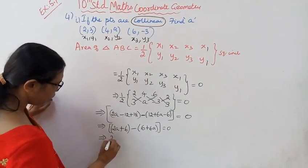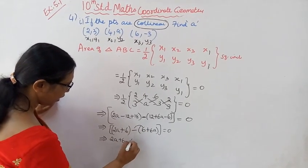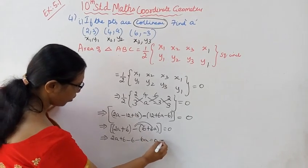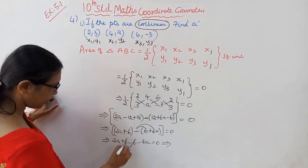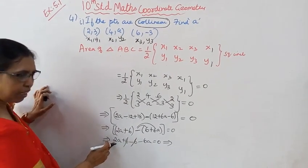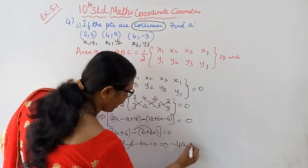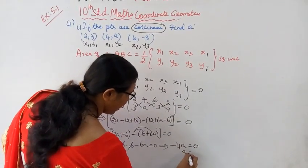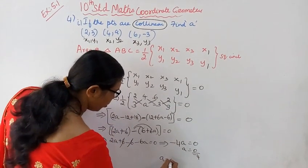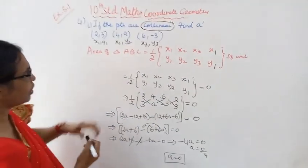This implies: plus 6 and minus 6 cancel. Minus 6A and 2A are like terms giving minus 4A, equal to 0. Therefore A equals 0 divided by minus 4, so A equals 0. The answer is A equal to 0.